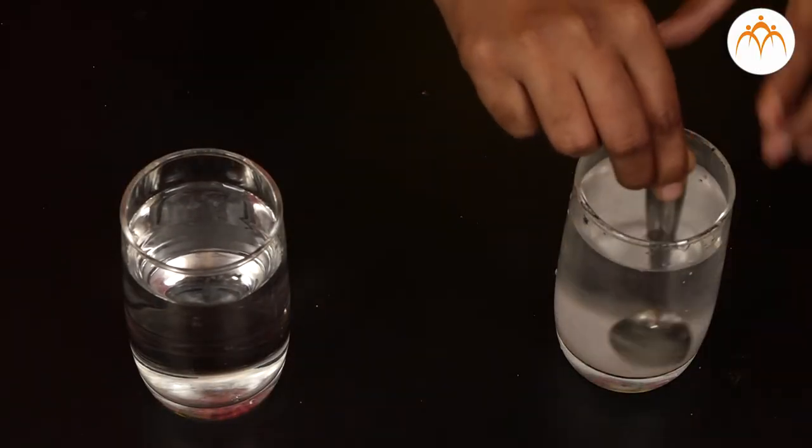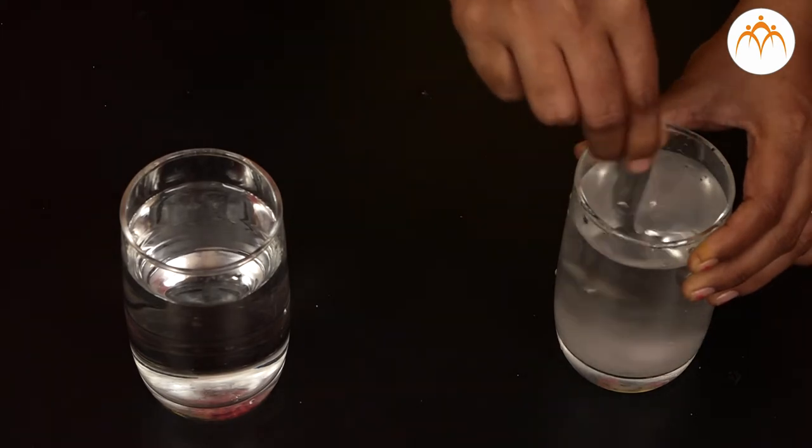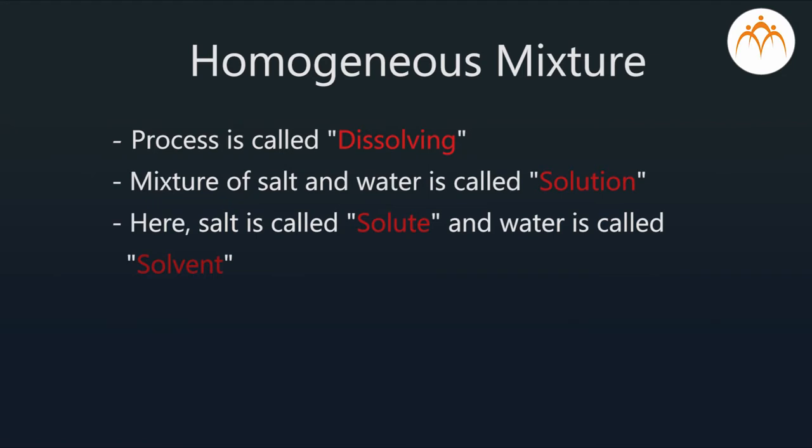In the previous activity, when we added salt, we could see the particles of salt. But after stirring, the salt particles disappeared. Salt particles spread in water and become smaller and smaller until they completely mix with water, forming a homogeneous mixture. This process is called dissolving and the mixture of salt and water is called a solution — in this case, a salt solution. Salt is the substance that dissolves, so it is called the solute. Water is the substance in which salt dissolves, so it is called the solvent. Water is a universal solvent as many substances dissolve in it.